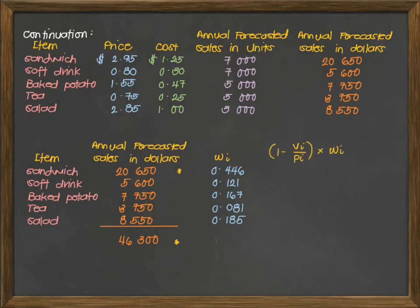The next column is 1 minus V over P, quantity multiplied by W. Looking at our table above, V is the cost and P is the price. Just using this formula and multiplying accordingly, the sandwich will give us an answer of 0.257. Again, in this column, we still use three decimal places. For soft drink, that's 0.076. Baked potato will be 0.116. Tea is 0.054, and salad will give us an answer of 0.120.